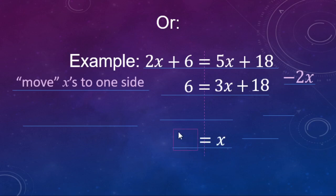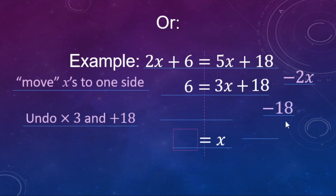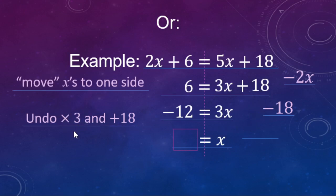We're looking to get x equals its value. We're going to undo the 3 being multiplied to the x and the 18 being added to the x. We undo a plus 18 with a minus 18. The arithmetic is on the left-hand side now: 6 minus 18 makes negative 12. On the right, the 18's cancel, leaving 3x. Then we undo the times 3 with a divide by 3 — negative divided by positive is negative — so 12 divided by 3 is 4, giving us negative 4.